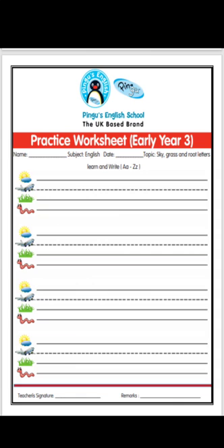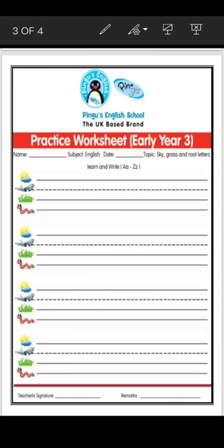Let me guide you on how to fill your worksheet. When writing uppercase, you can use letter A. Now, what about lowercase A? Is it a Sky letter, Grass letter, or Root letter? It's a Grass letter, so you use green color. Green color will identify that A is a Grass letter.